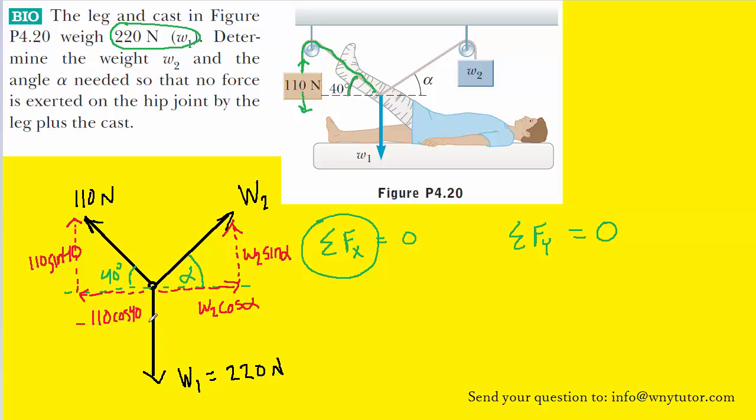We'll notice that w1 points directly downward, and because of that it will not have any x-component. The value of 220 newtons only applies in the y-direction, so we will not include w1 in the sum of the forces in the x-direction.